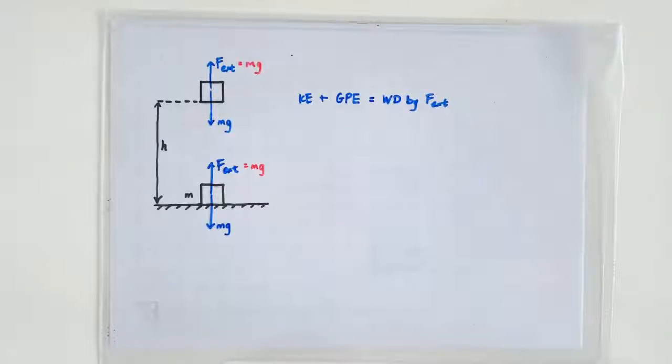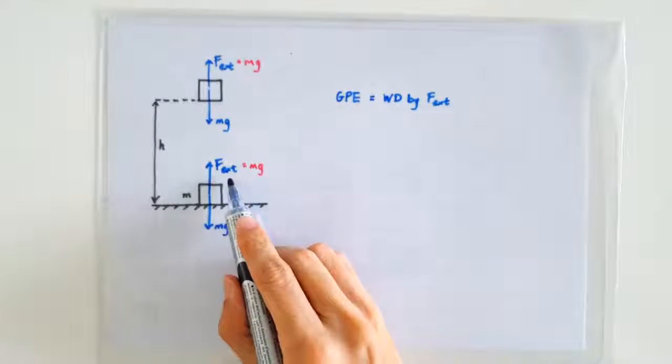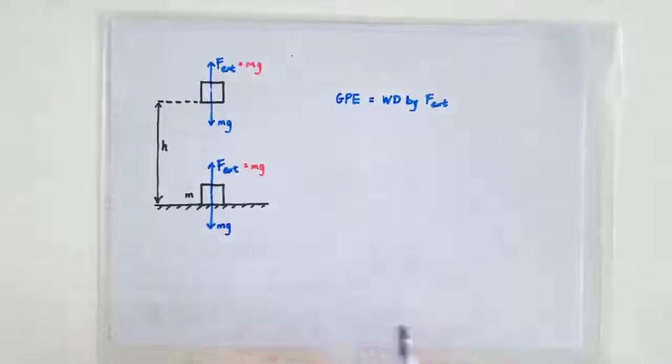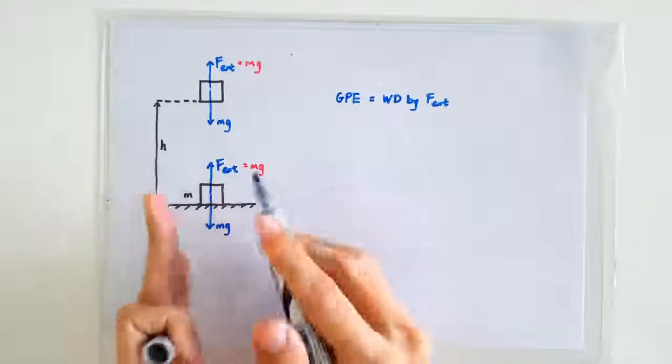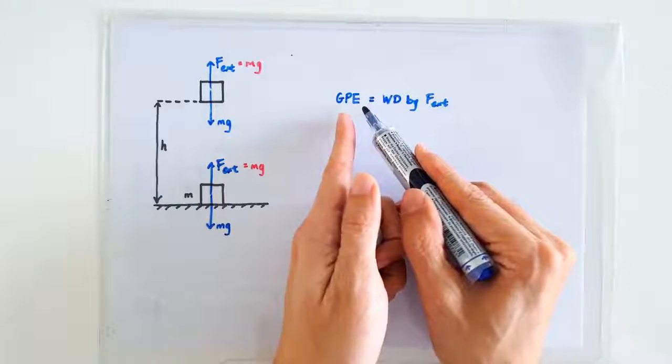And we don't want that. That's why we want to imagine that the external force is always equal to Mg, so that all the work done by the force goes only into increasing the GPE of the mass.